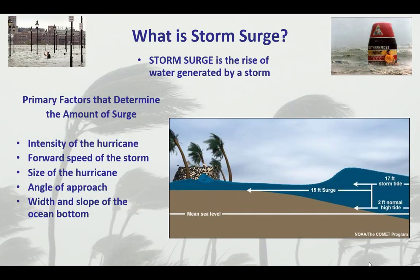So what is storm surge? Storm surge is the rise of water generated by a storm. Now there are a lot of factors that determine the amount of surge for a particular storm: the intensity of the storm, the forward speed of the storm — is it moving slow or is it moving fast — the size of the hurricane, the angle of approach to the coastline, and the width and slope of the ocean bottom.